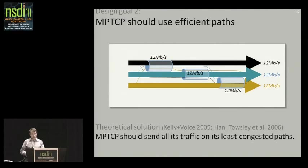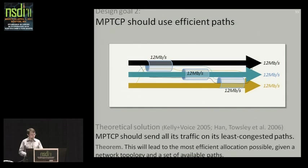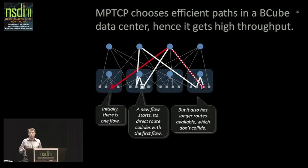There is in fact a theoretical solution which says what the answer is for an arbitrary network. If each multipath flow sends all of its traffic on its least congested paths, you will end up with the most efficient outcome possible for that network and set of paths. There's a theorem to that effect — the proper people to quote are Kelly and Voice, 2005, and Han, Talsy, and others, 2006. That tells us how to achieve an efficient allocation with multipath in general.